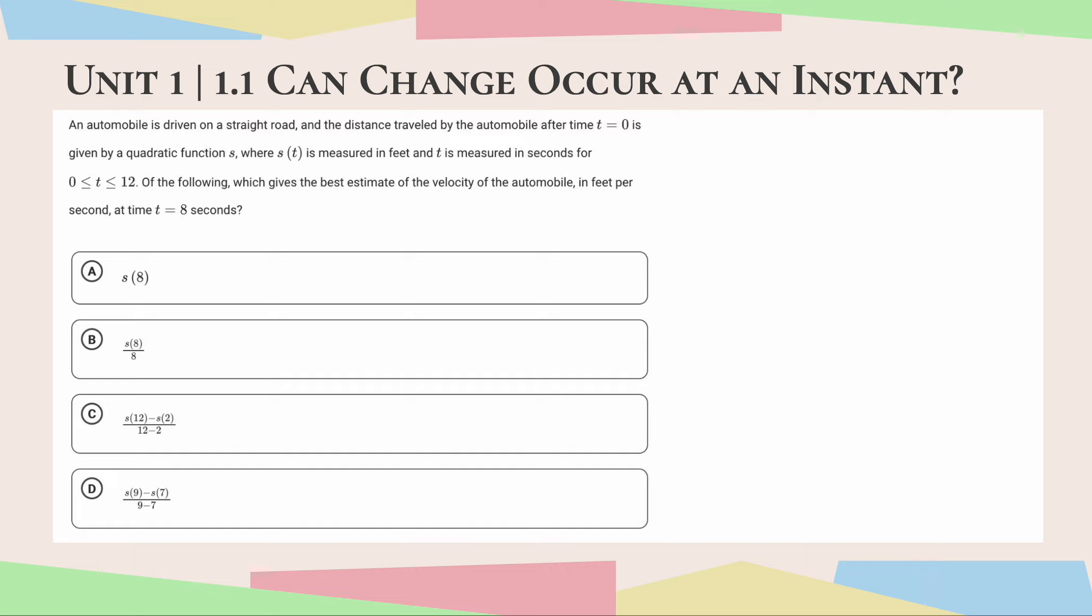So this question says, an automobile is driven on a straight road and the distance traveled by the automobile after time t equals 0 is given by a quadratic function s where s of t is measured in feet and t is measured in seconds for 0 is less than or equal to t is less than or equal to 12. Of the following, which gives the best estimate of the velocity of the automobile in feet per second at time t equals 8 seconds?